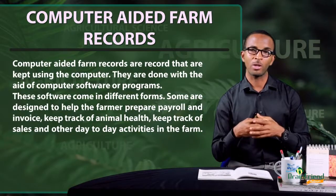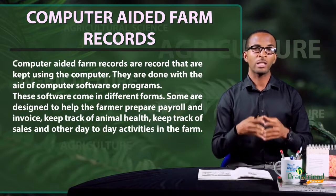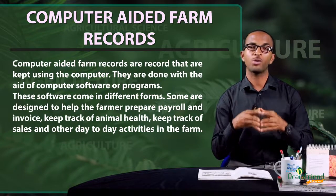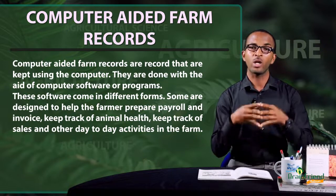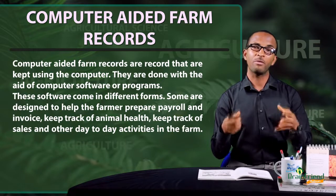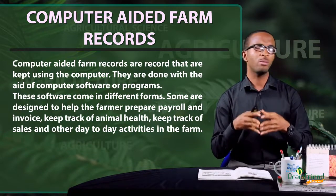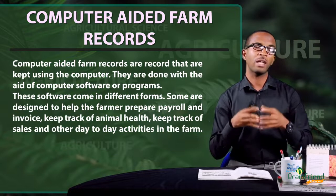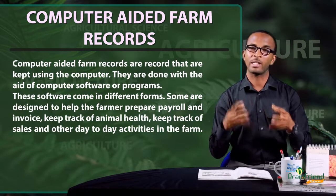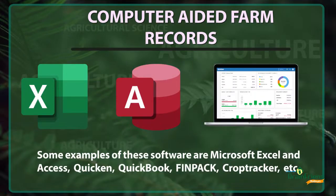Now let's talk about computer-aided farm records. What is a computer-aided farm record? Simply put, these are records that are kept using the computer. For a farmer to be able to keep records on his computer, he needs some software to help him do this. This software comes in different forms — some are designed to help the farmer prepare payroll, keep track of animal health, make invoices, and keep track of sales and other day-to-day activities. On our screen, we can see some logos showing examples of these software.